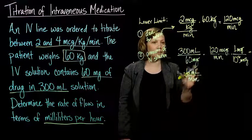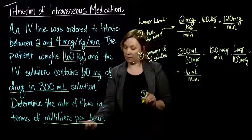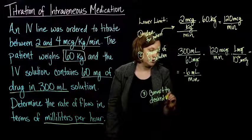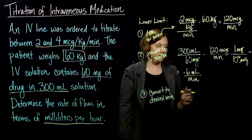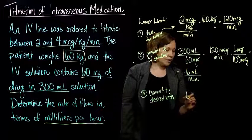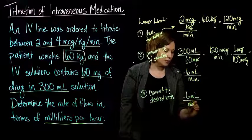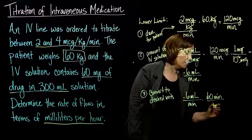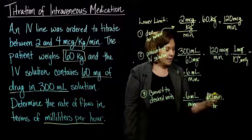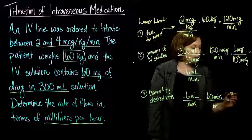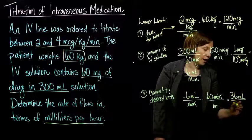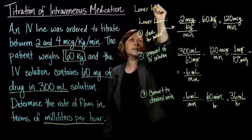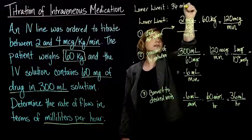We're almost done, but we need to convert to per hour. We have 0.6 milliliters per minute, and there are 60 minutes per hour. The minutes cancel out, and we end up with 36 milliliters per hour. So our lower limit is 36 milliliters per hour.